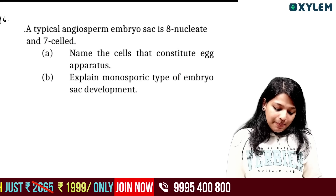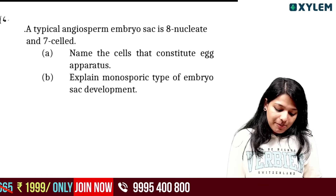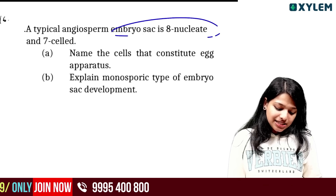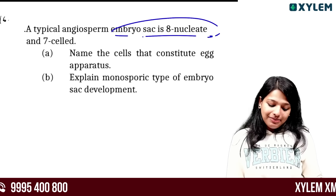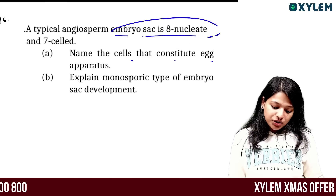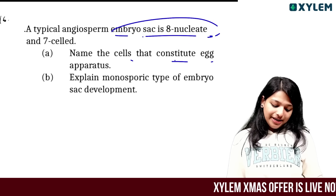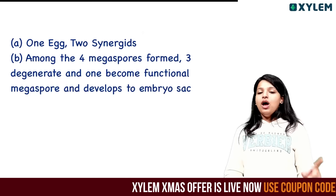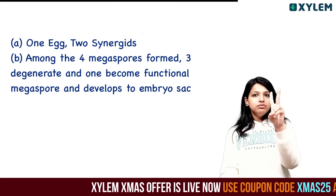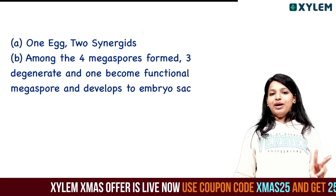A typical angiosperm embryo sac has eight nuclei and seven cells. Name the cells that constitute the egg apparatus. Explain monosporic development. The egg apparatus consists of one egg cell and two synergids.